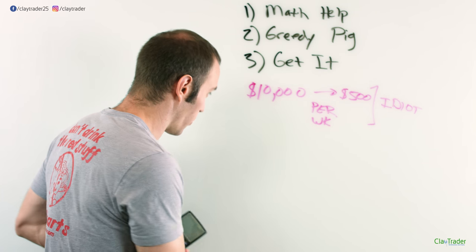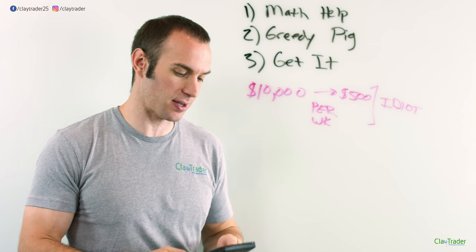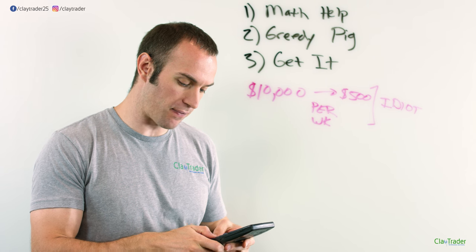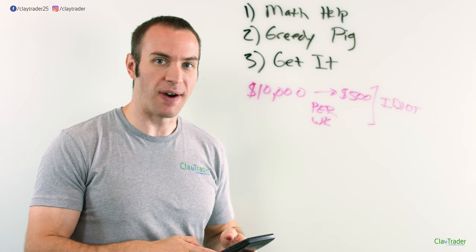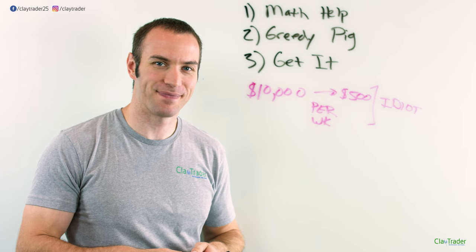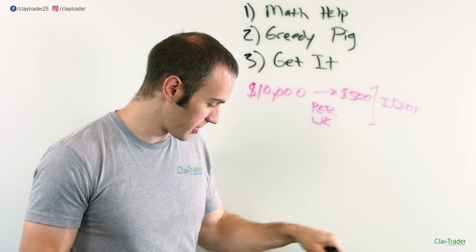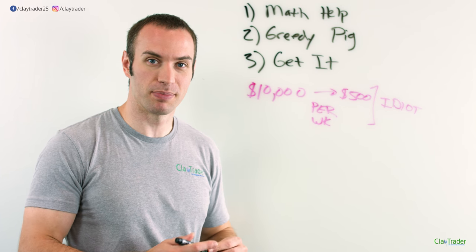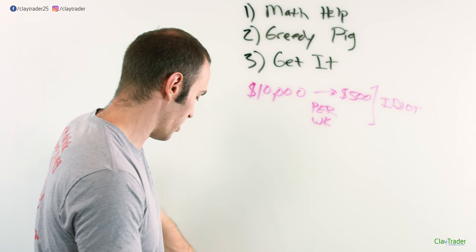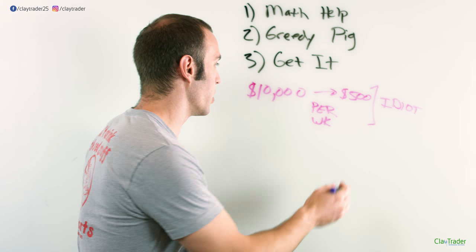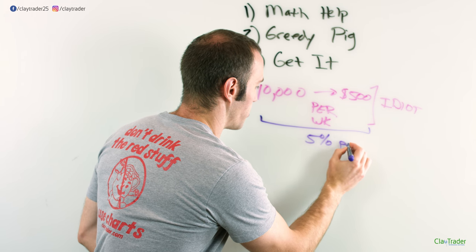Got my calculator. Who remembers the TI-83? An absolute classic. So you have $10,000 and you're making $500 per week. That is a 5% return. Did I really need a calculator for that? I can already see it now, the comment section blowing up. Biggest idiot ever. Regardless, this all equates to 5% per week on your money.